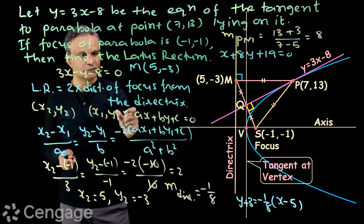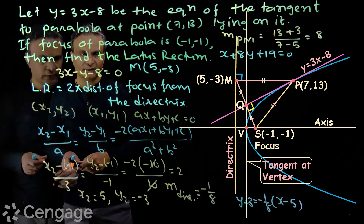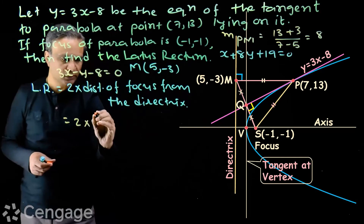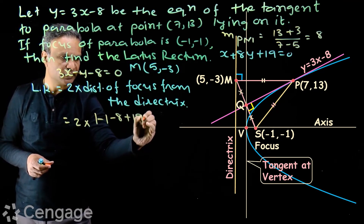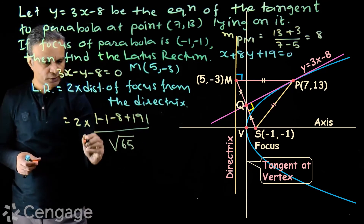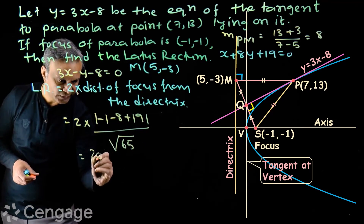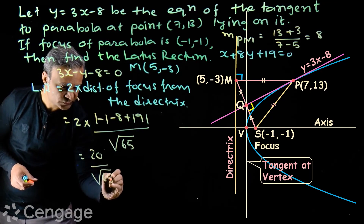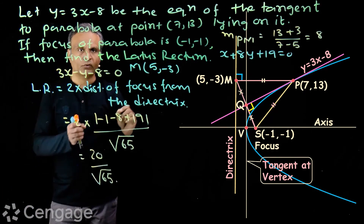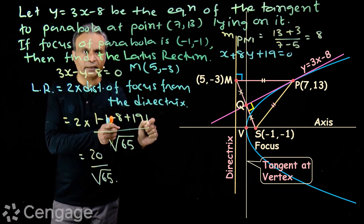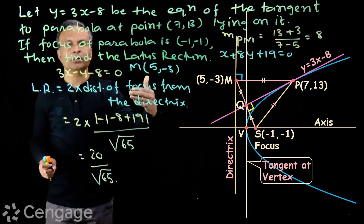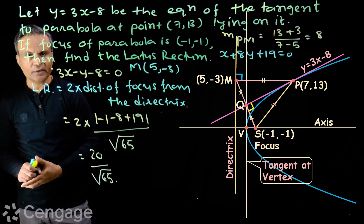Now we can find the length of the latus rectum using the formula: 2 × distance of focus from the directrix. Substituting the focus (-1, -1) into x + 8y + 19 = 0: |(-1) + 8(-1) + 19| / √65 = |-1 - 8 + 19| / √65 = 10/√65. Therefore, the latus rectum = 2 × 10/√65 = 20/√65. This is the length of the latus rectum, derived using the property that the reflection of the focus in a tangent to the parabola lies on the directrix.